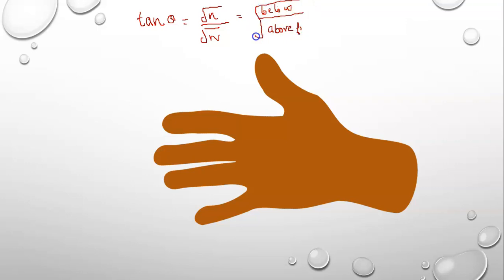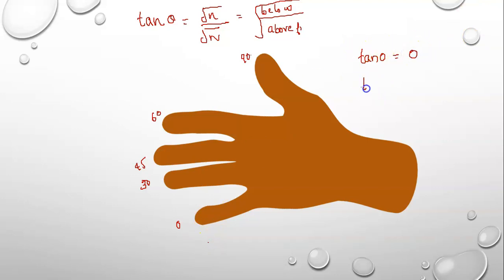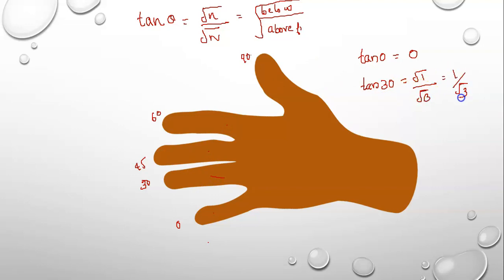If you look at this, the angles are 0, 30, 45, 60, 90. Let's set one value. For 0 degrees: below value is 0. For 30 degrees: it is below finger, so it is 1. For 45 degrees: it is above finger — 1, 2, 3 — the answer is 1 by root 3.